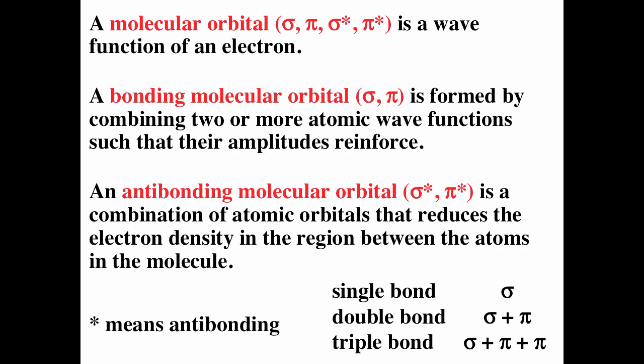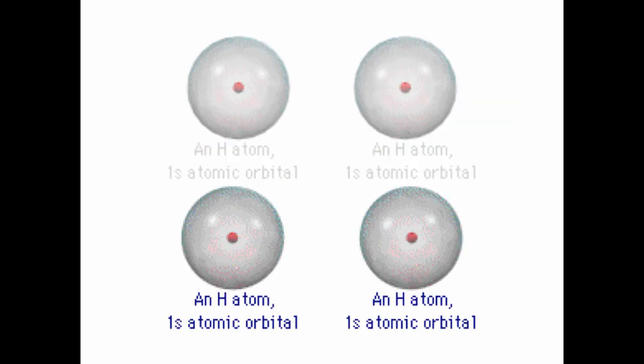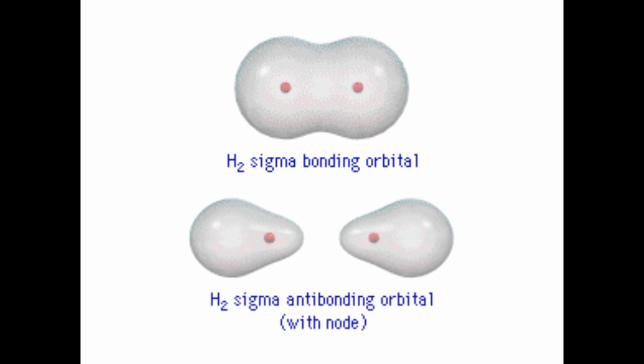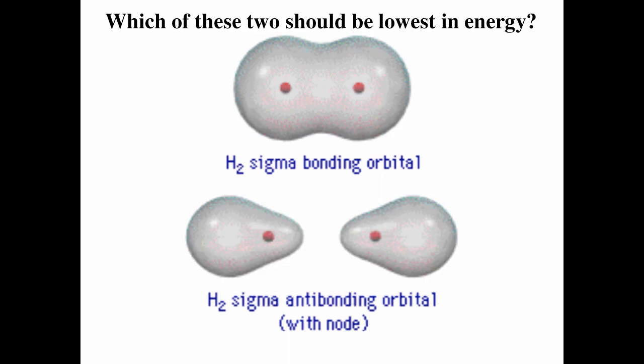In a bonding molecular orbital, you are sharing electron density between two nuclei. In an anti-bonding orbital, you are not sharing electron density between two nuclei. Sigma electron density is on the internuclear axis; pi electron density is above and below the internuclear axis. The bonding molecular orbital has greater electron density in the bond region, maximizing electrostatic attraction. The anti-bonding molecular orbital has reduced electron density in the internuclear region.